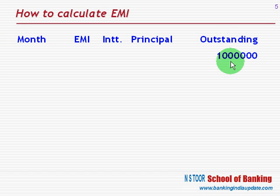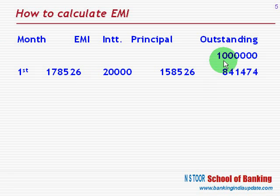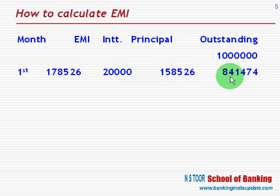We have a loan of Rs 10 lakh. At the end of the first month, Rs 1,78,526 shall be paid. On 10 lakh at 2%, interest is 20,000. So out of this, 20,000 is used for interest and the remaining amount is for principal repayment. The remaining balance is Rs 8,41,474.